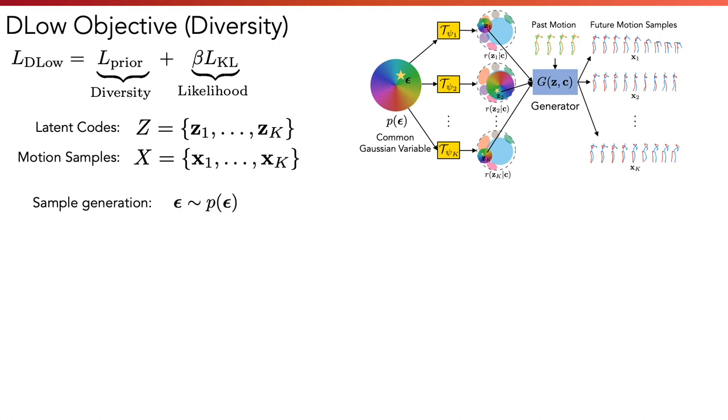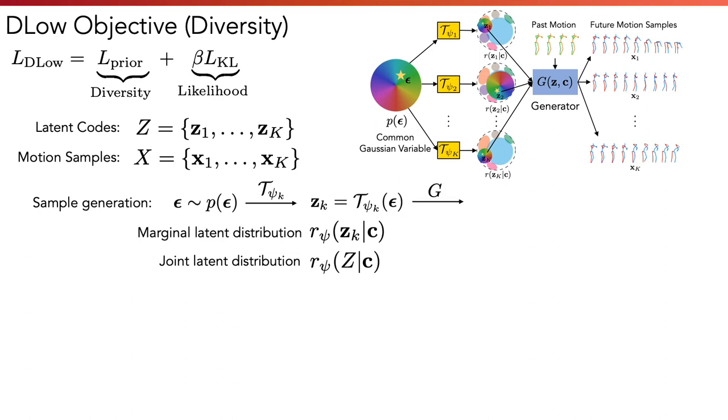This process induces a marginal latent distribution on each latent code zk, and a joint latent distribution on the whole set of latent codes. Then, each zk is mapped to a motion sample xk by the generator, which induces a marginal sample distribution on each motion sample xk, and a joint sample distribution on the whole set of motion samples.